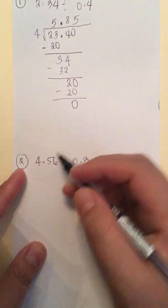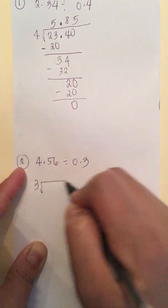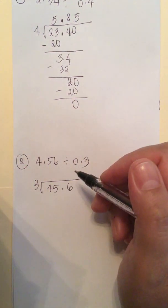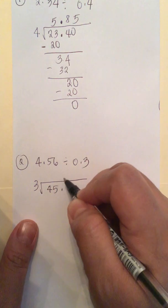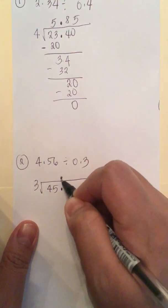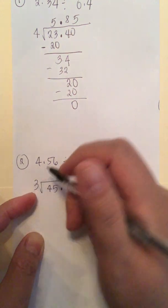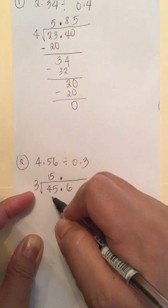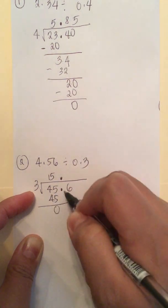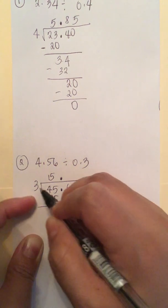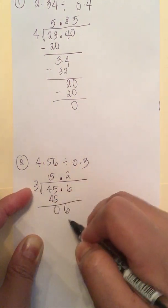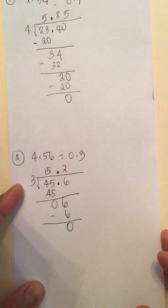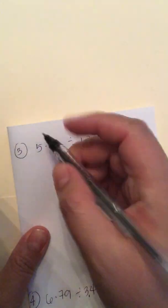For the next one, 45.6 divided by 3 — the divisor becomes 3 and the dividend becomes 45.6. We put the decimal point in the same place. 45 divided by 3 is 15, 15 times 3 is 45, so this is 0. We bring down the 6: 6 divided by 3 is 2, and 2 times 3 is 6, so we subtract and get 0.